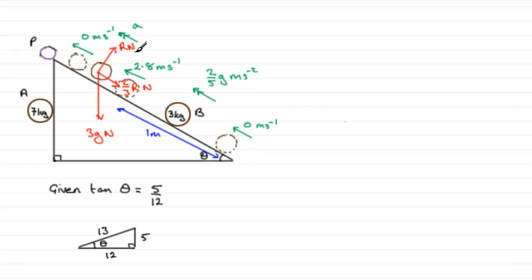We found out in the earlier part, though, that the normal contact force R was 36 thirteenths G. That was done in the last part, 36 thirteenths G Newtons.